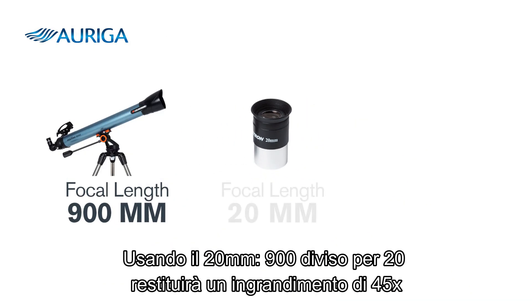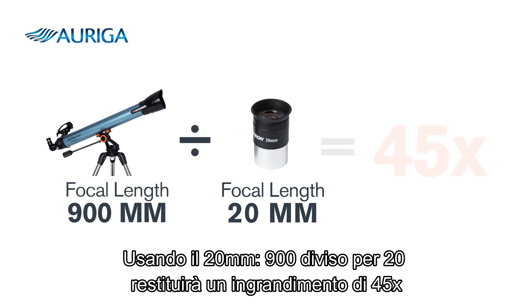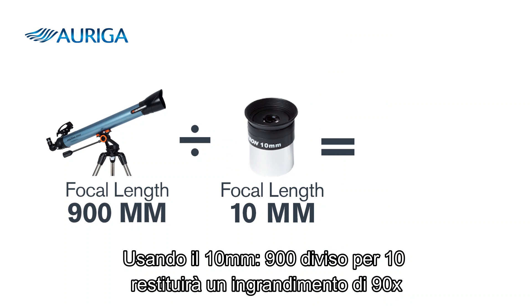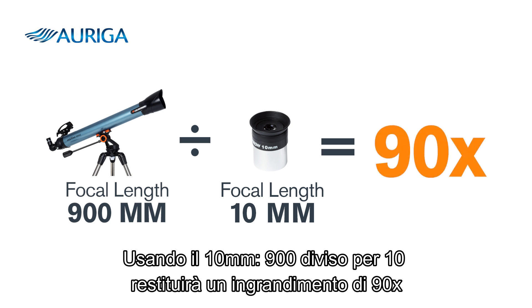Using the 20 millimeter eyepiece, 900 divided by 20 will yield a magnification of 45 times. Using the 10 millimeter eyepiece, 900 divided by 10 will yield a magnification of 90 times.